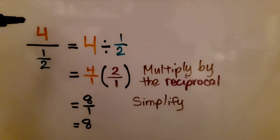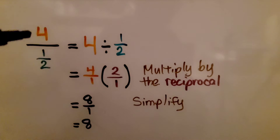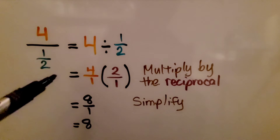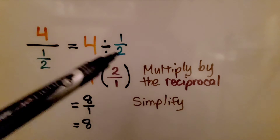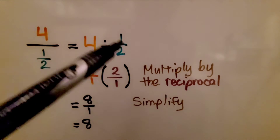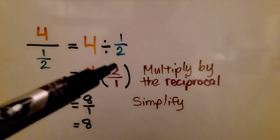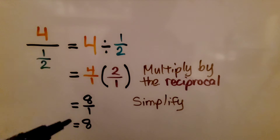Here the numerator is a whole number and the denominator — the divisor — is a fraction. This means we have 4 divided by 1/2. We multiply by the reciprocal, 2 over 1. We have 4 times 2 is 8 over 1 times 1 is 1. We simplify it and we have 8.